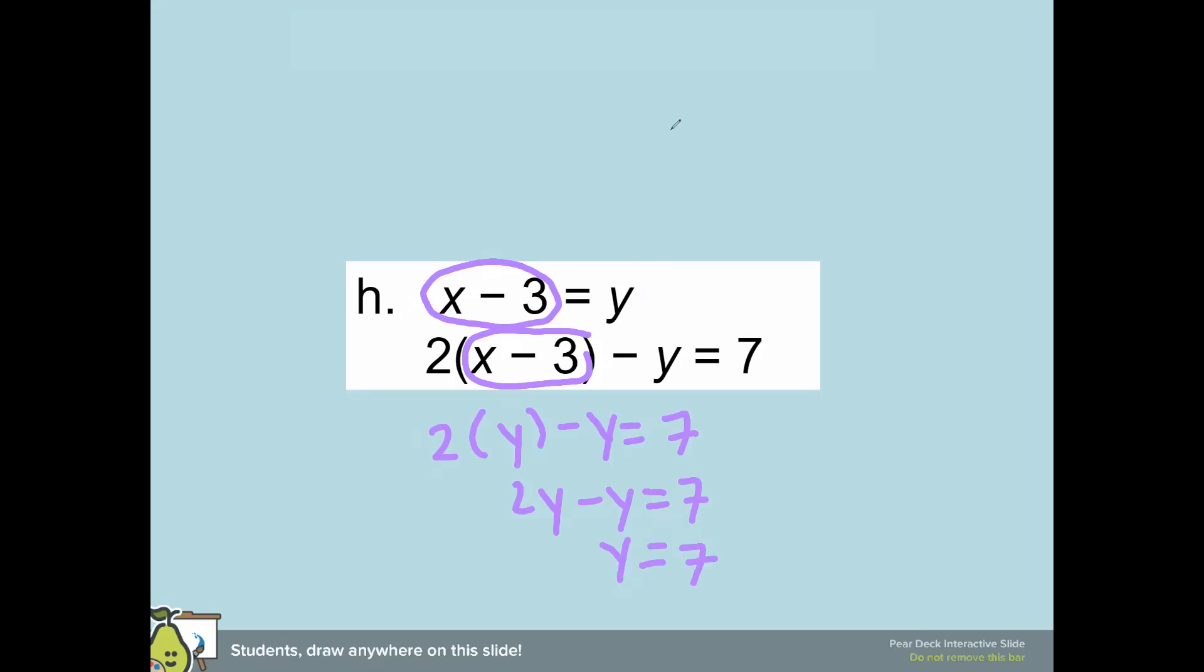Then I'm going to substitute it into the top one, which would be the easiest. So I'm going to go x minus 3 equals 7. I add my 3, I get x is equal to 10, and then the answer is going to be 10 comma 7.